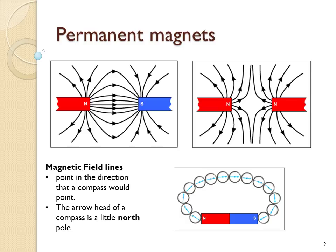The arrow of a compass is a little north pole. It's therefore repelled from the north pole of an adjacent magnet and attracted towards the south pole.